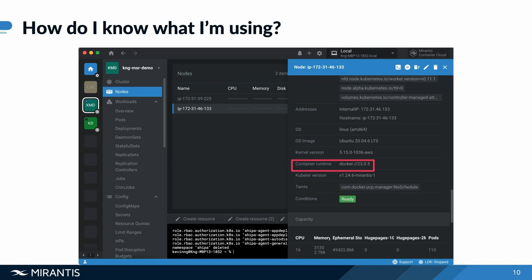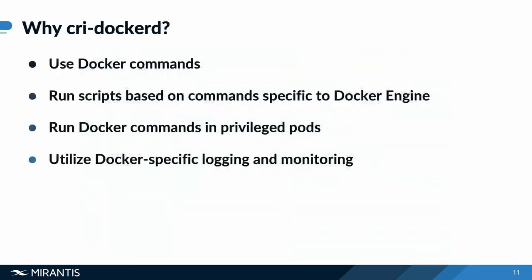If you're using Docker and the Mirantis container runtime, then most likely you would either already have CRI Docker D implemented because of the Kubernetes engine, or you will need to make sure that if you upgrade to a later version of Kubernetes, you will need to have CRI Docker D running. Let's have a look at the use cases — why do you want to use CRI Docker D? What's the use case for having the entire car?